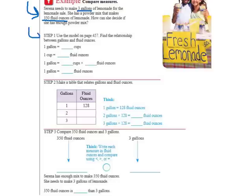Let's just go through the steps. Step one, use the model on the back to find the relationship between gallons and fluid ounces. It tells us that one gallon, that bar model that we saw on the other side, is equal to 16 cups. And one cup is eight fluid ounces. So one gallon is equal to 16 cups times eight fluid ounces. So one gallon is 128 fluid ounces.